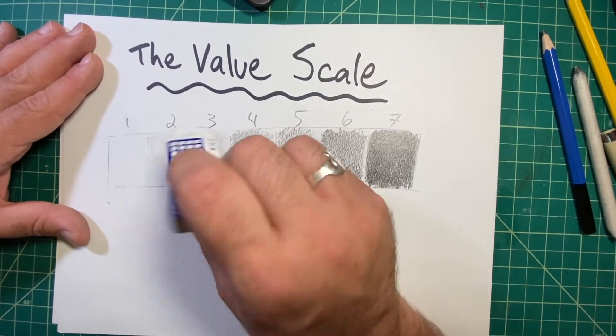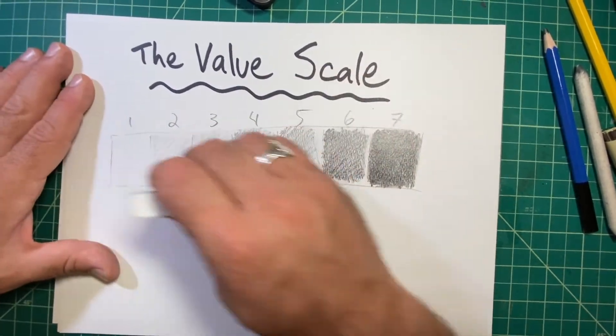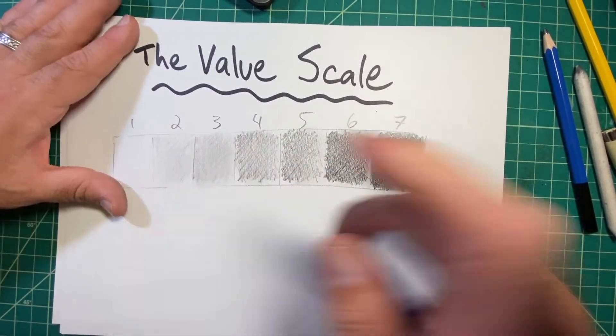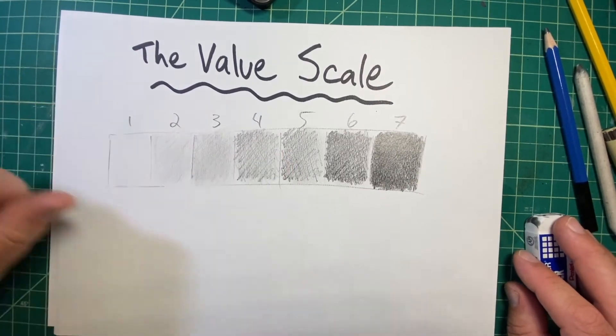Again, I'm not pressing too hard with my eraser, just trying to lighten it up a little bit. Okay, so that solves this and compare it to the rest. Now, four and five are still very similar.